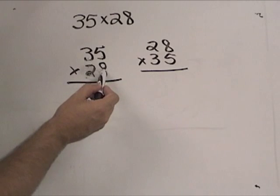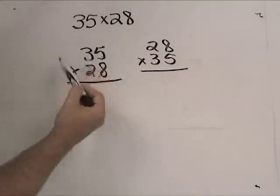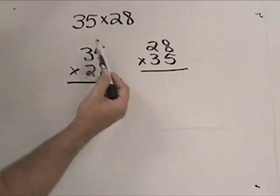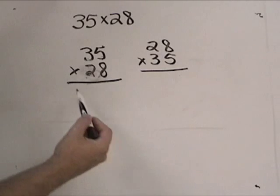The way that a lot of people were taught in school is just the pattern. Multiply, set up the number like this, doesn't matter which way you set it up with the 28 on the bottom, 35 on the bottom, doesn't matter, you need the same answer.